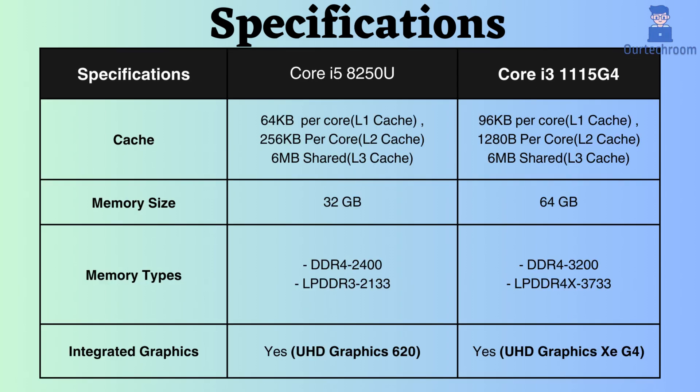Looking at the cache size, the Core i3-1115G4 boasts larger L1 and L2 cache sizes. This increased cache size facilitates faster data access and reduces latency.